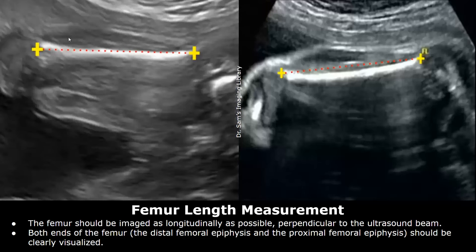Both ends of the femur — the proximal and distal femoral epiphysis — should be clearly visualized. The epiphysis is the end part of a long bone, the femur in this case.